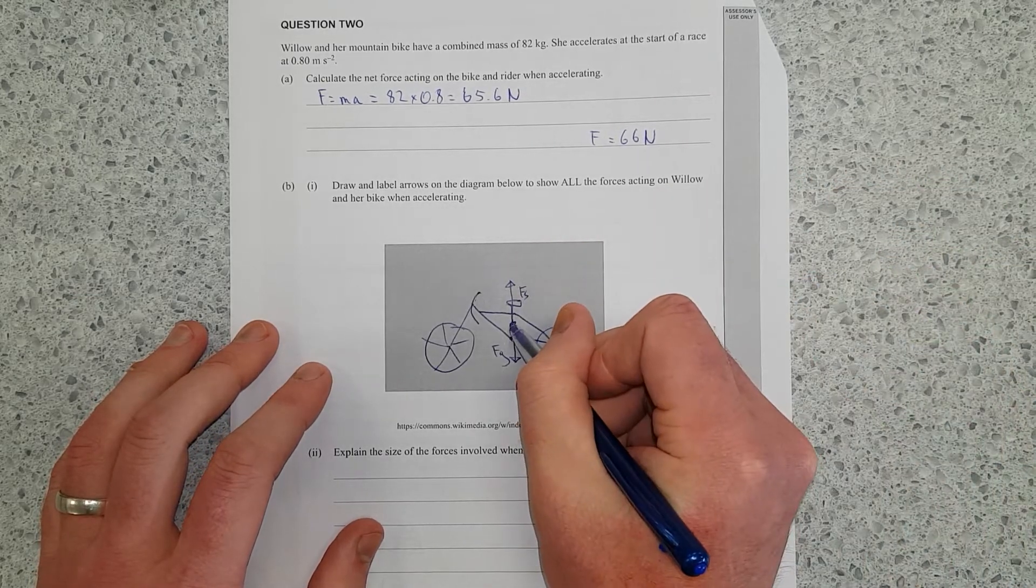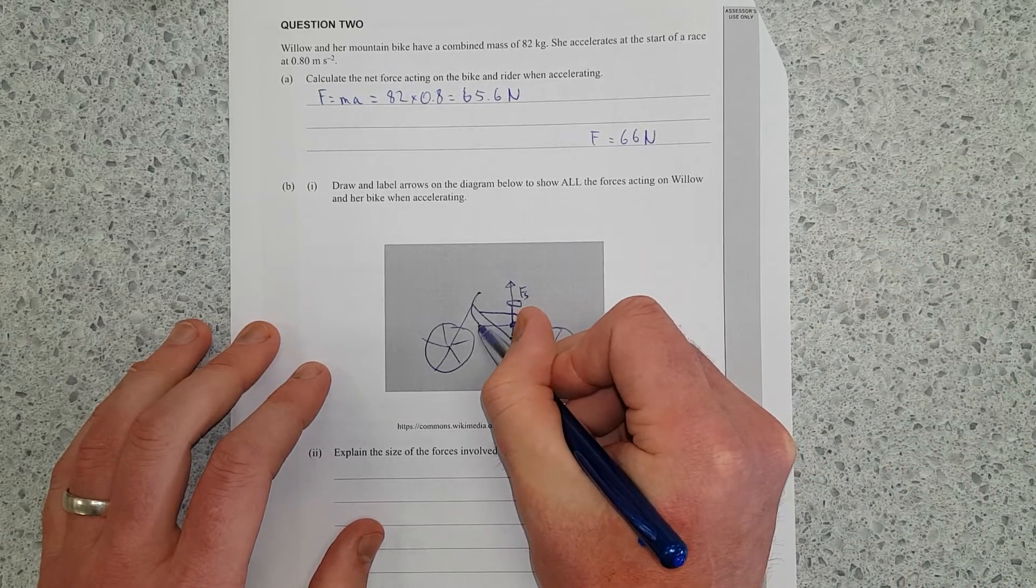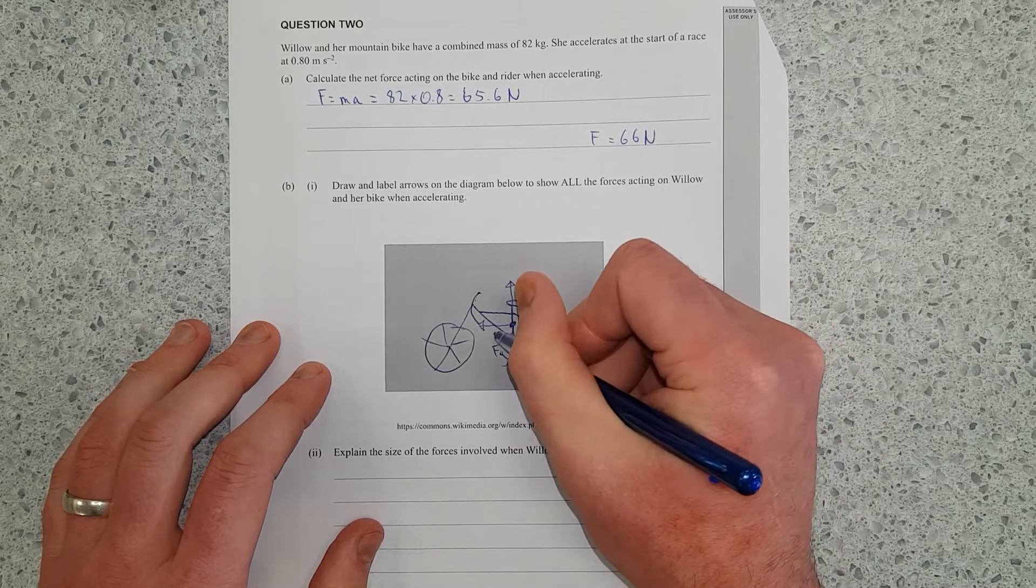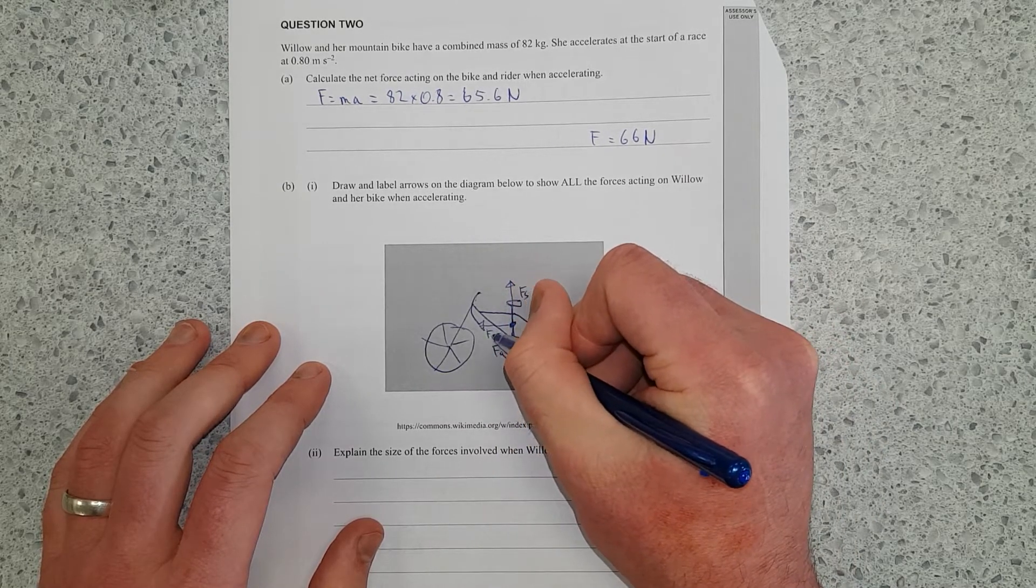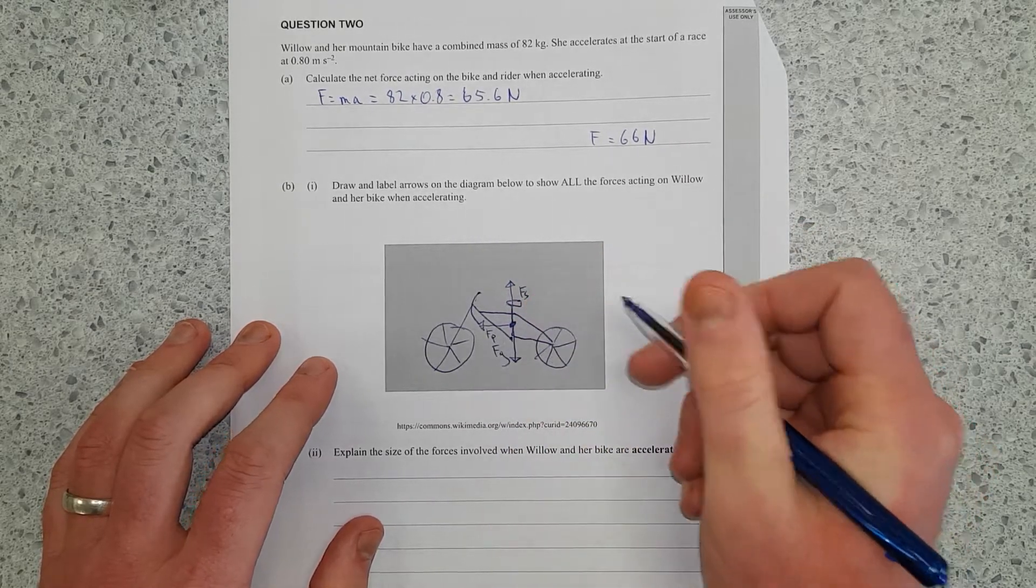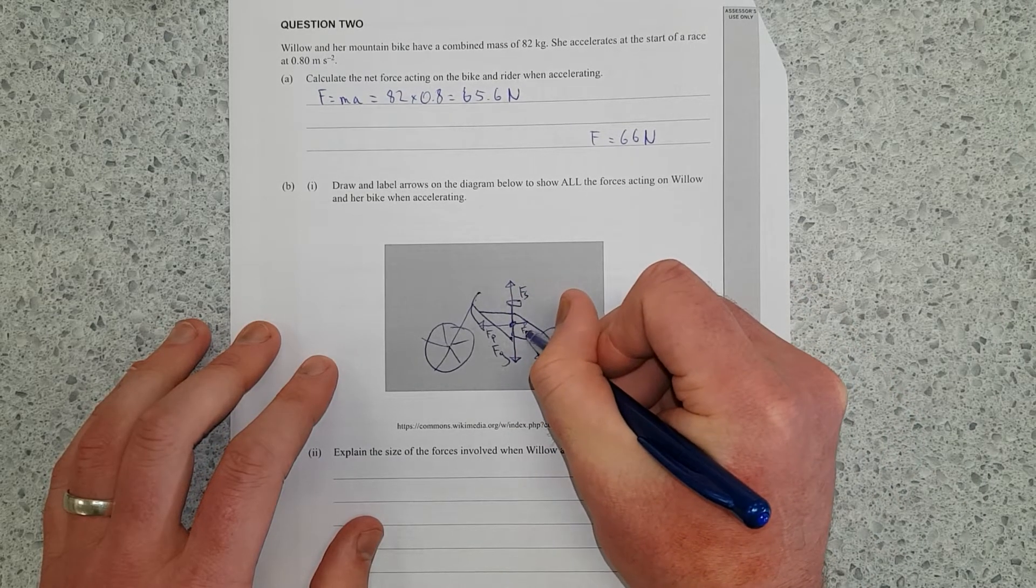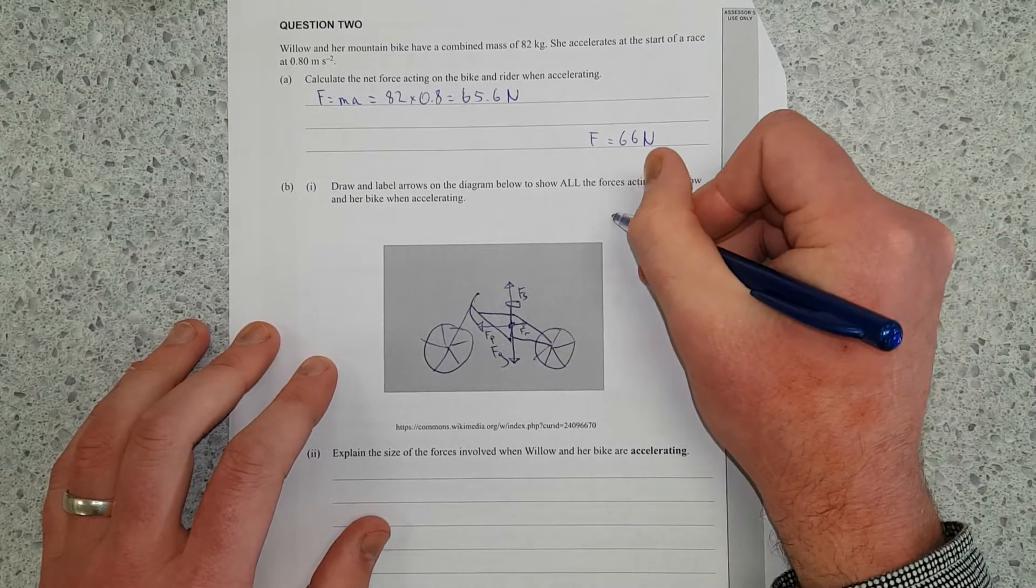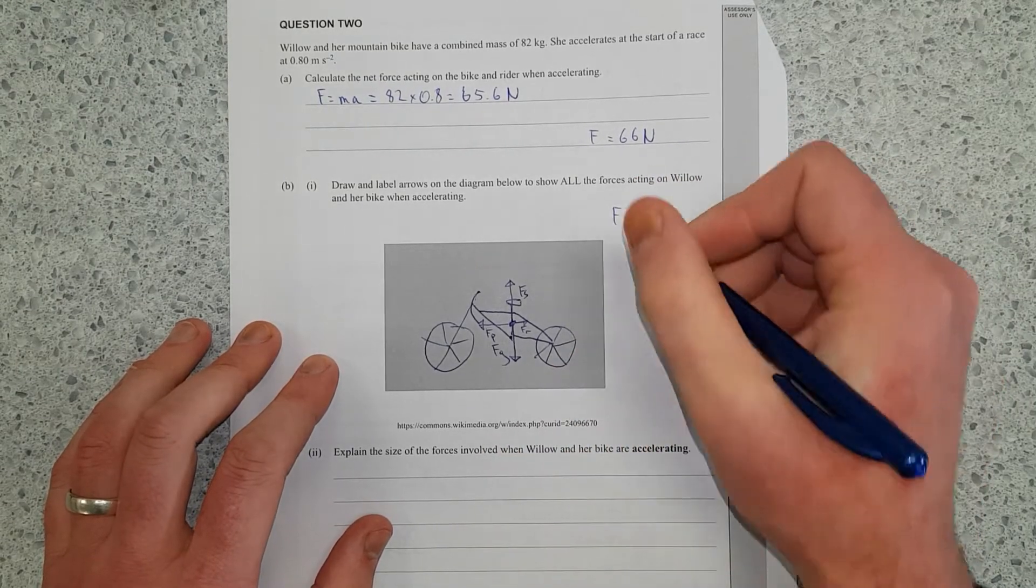And then she's going to have, moving forwards. I'll draw it, not too big. I'm going to call this FP. That should be P. And I'll draw this a little bit back. I'm going to call this FR. You have to have a key. If you're going to do it like that, you're going to have to have a key.